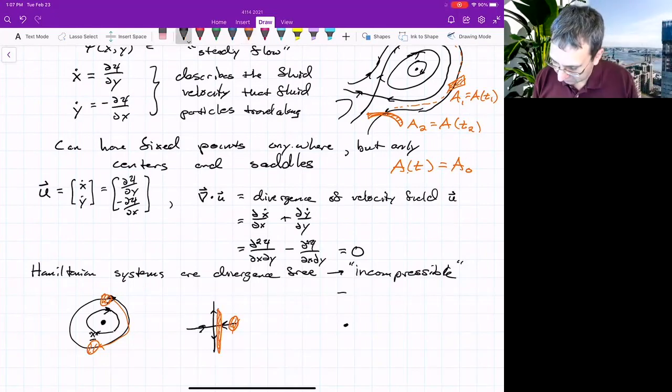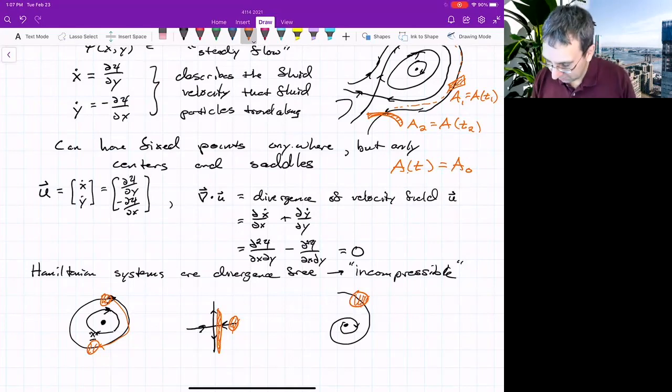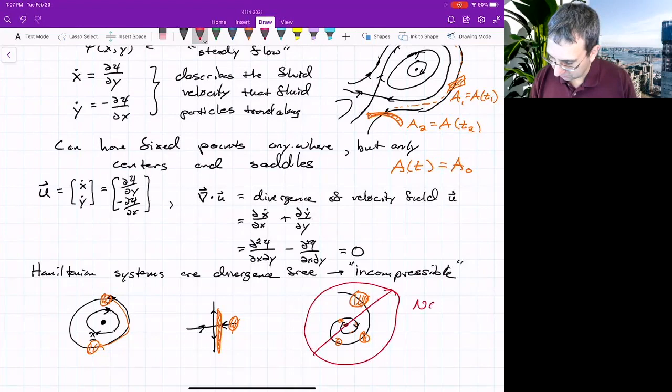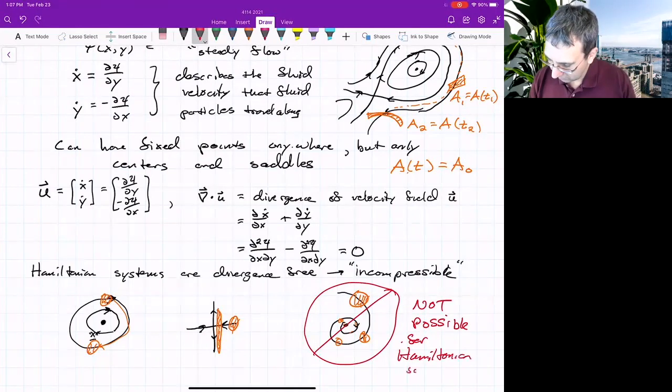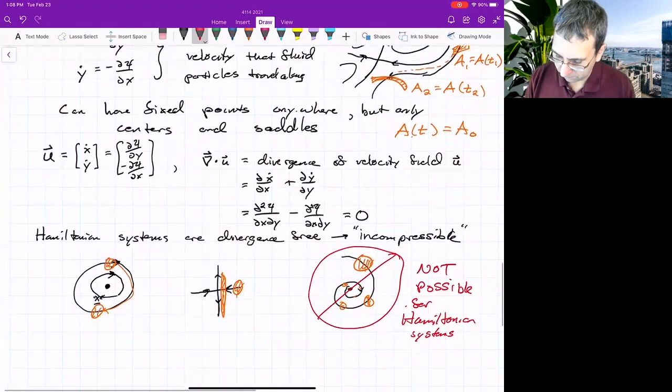What you can't have is something spiraling in or going out. Why is that? Because then you would need that some blob starting with a certain area, the area keeps getting smaller and smaller and smaller. You just can't get that in a divergence free flow. So maybe we put a big slash through this. Not possible. It's not possible for Hamiltonian systems. It's not possible for any system that is divergence free.